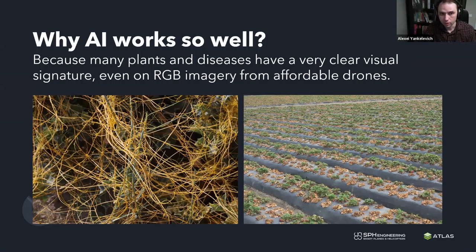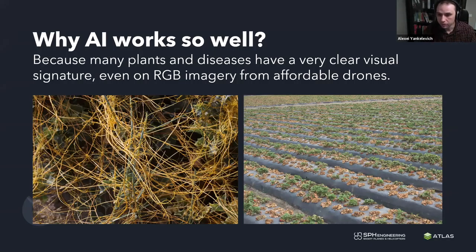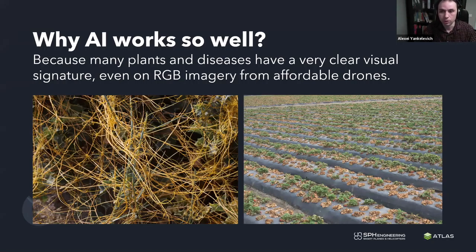Why does AI work so well? Because many plants and diseases have a very clear visual signature, even on RGB imagery from affordable drones. As you can see on these pictures, the healthy plants are clearly separable from the background and from depressed ones. For many cases — not all, of course — I don't want to say that multispectral imagery can be substituted with RGB. But for some cases, even on RGB imagery, you can see and get a lot of useful information.